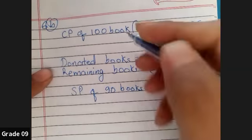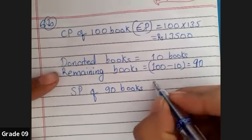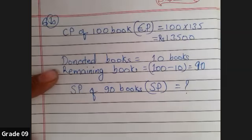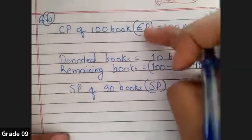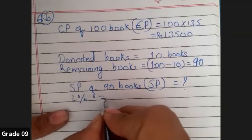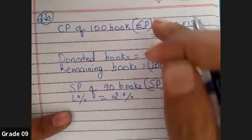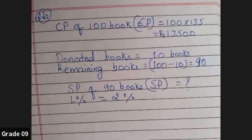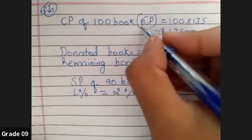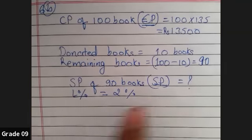For 100 books, cost price rate was given, so we calculated directly, but right now nothing is given for selling price. But between cost price and SP, there is a loss percentage. If loss percent is given, what is the loss percent? Two percent loss. So CP, SP, and loss percent. Now you have to write the formula which matches these three elements.